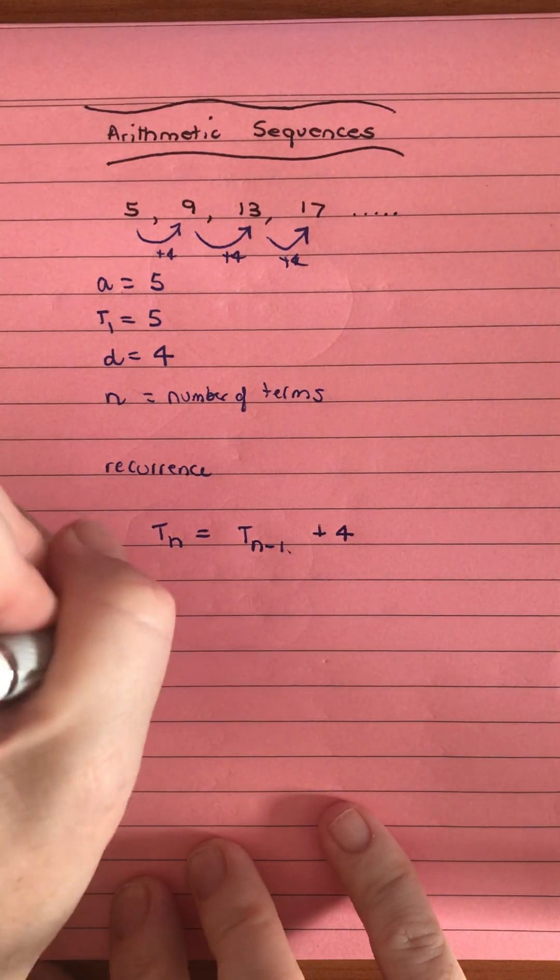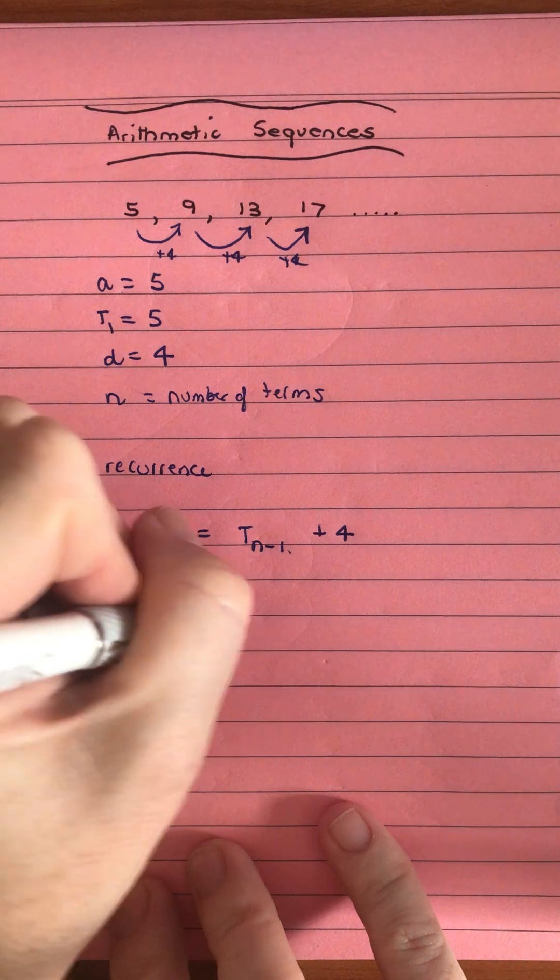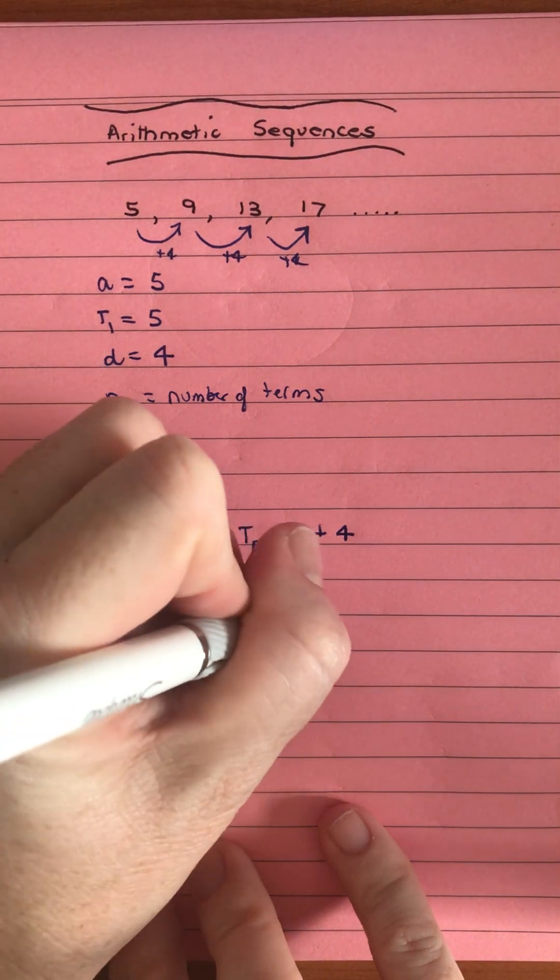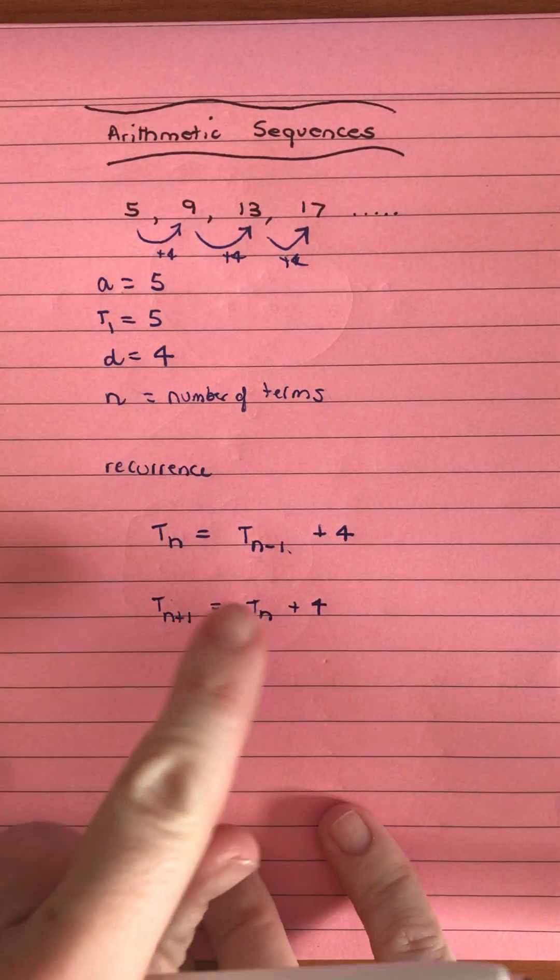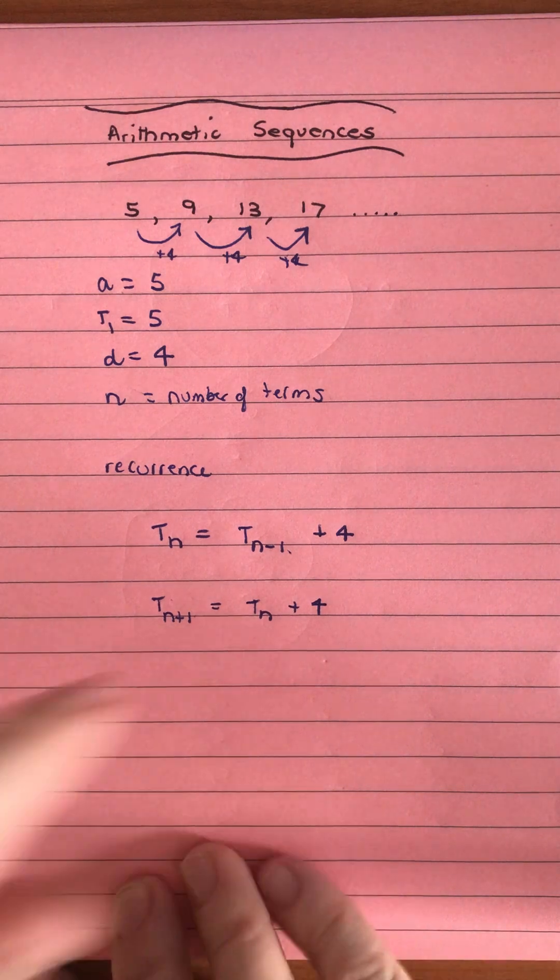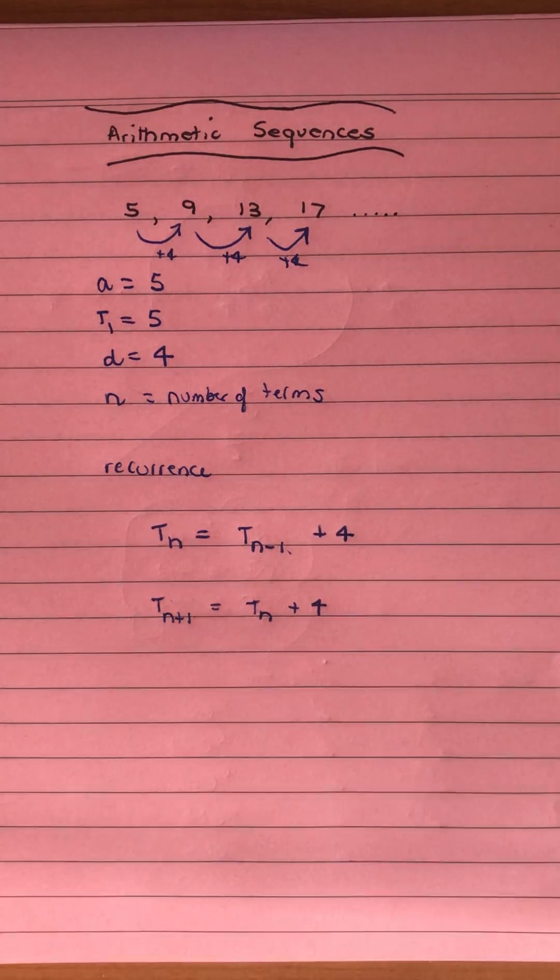You may also see in textbooks it written as T_{n+1} = T_n + 4, which means to get to the next one, what do you do with the current one? Both notations describe the same thing.